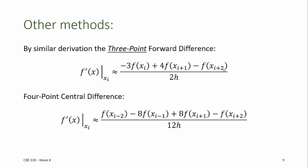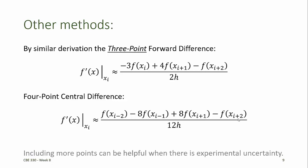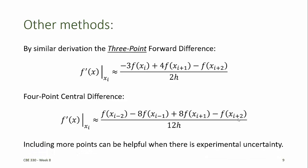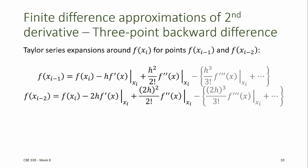Or, we can derive a four-point central difference formula, using the points xi minus 2, xi minus 1, xi plus 1, and xi plus 2. Including more points can be helpful, particularly when there is experimental uncertainty.